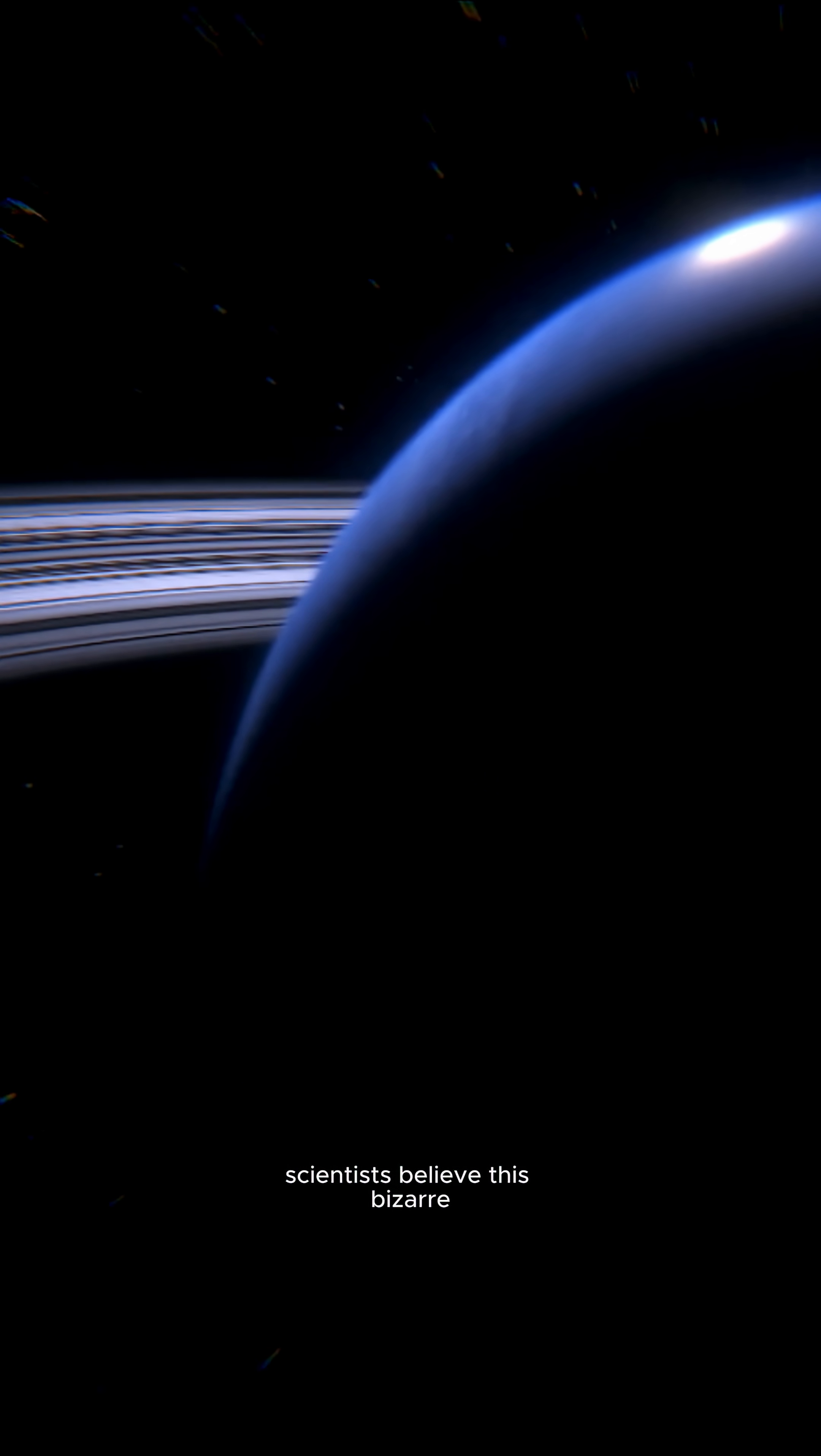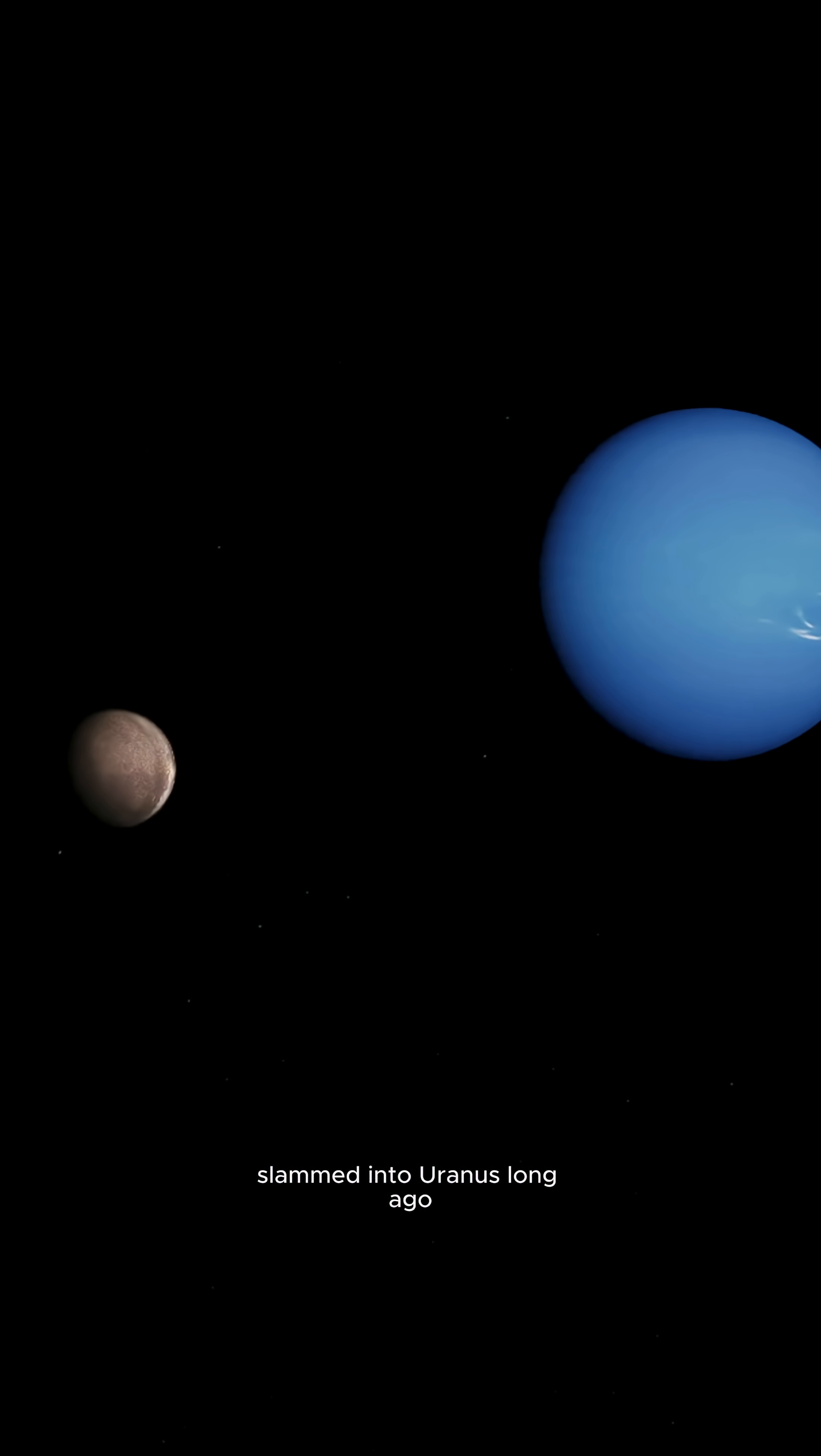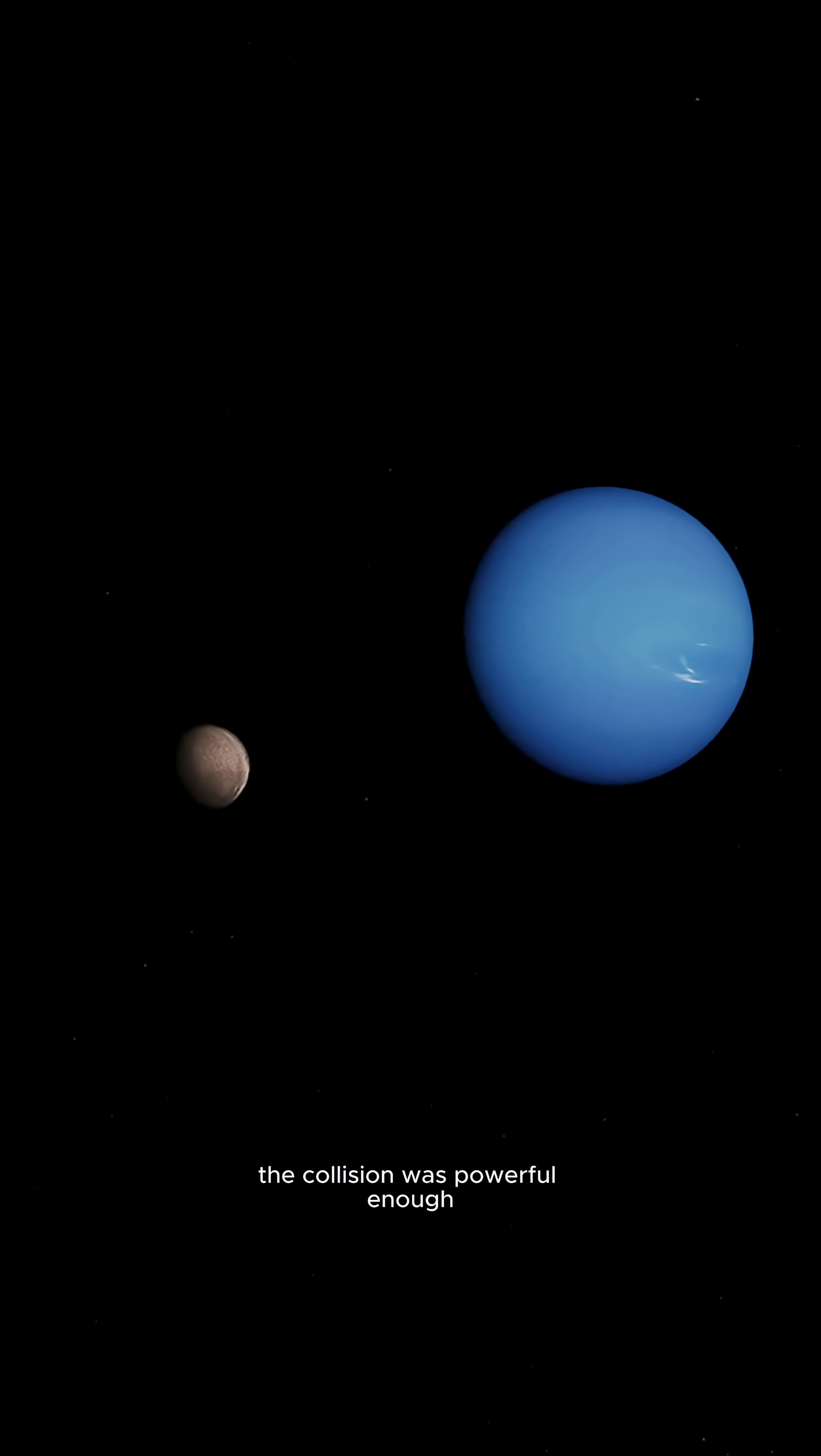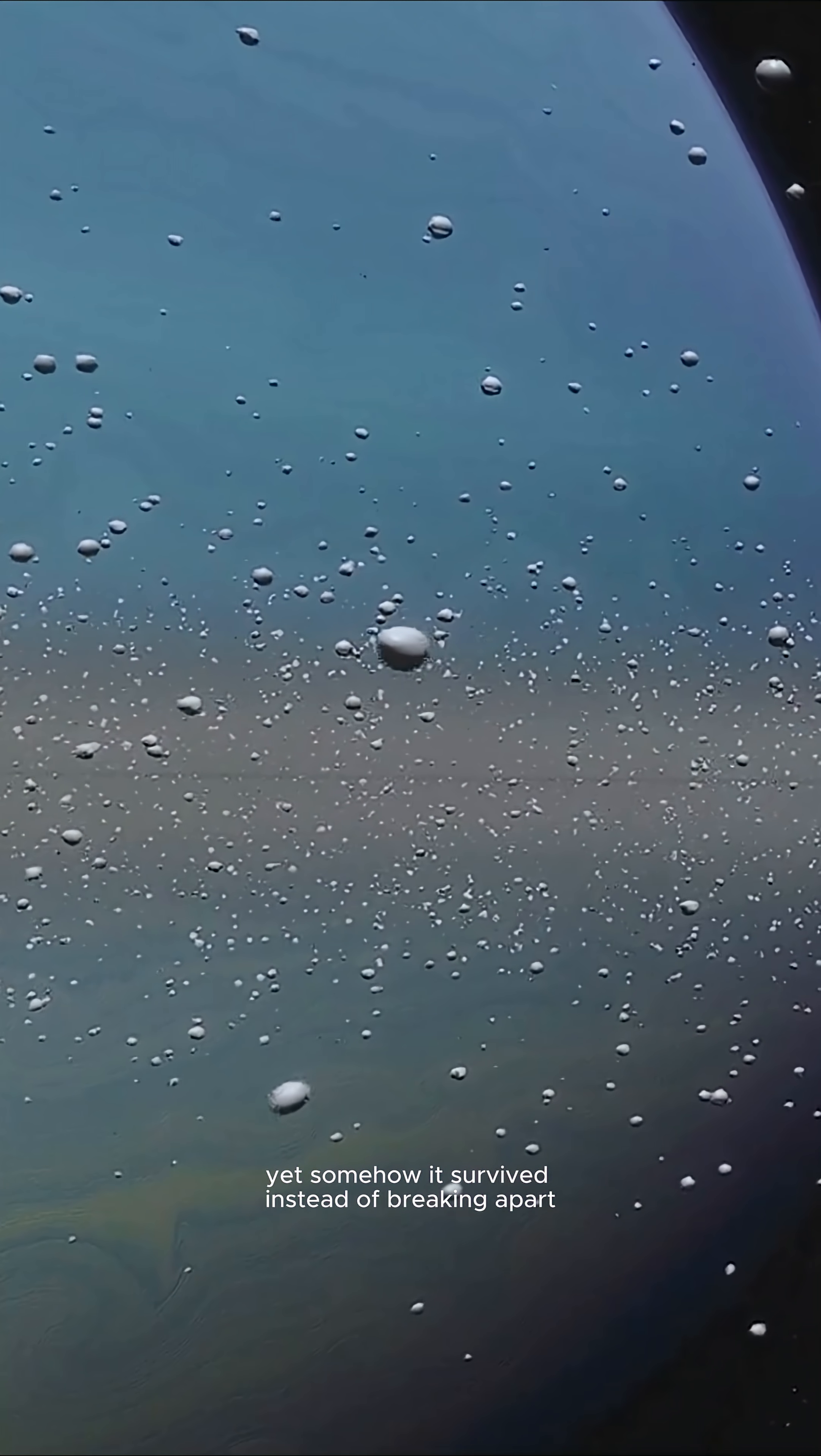Scientists believe this bizarre tilt came from a massive ancient impact. Something huge, possibly a planet-sized object, slammed into Uranus long ago. The collision was powerful enough to tilt an entire planet, yet somehow it survived instead of breaking apart.